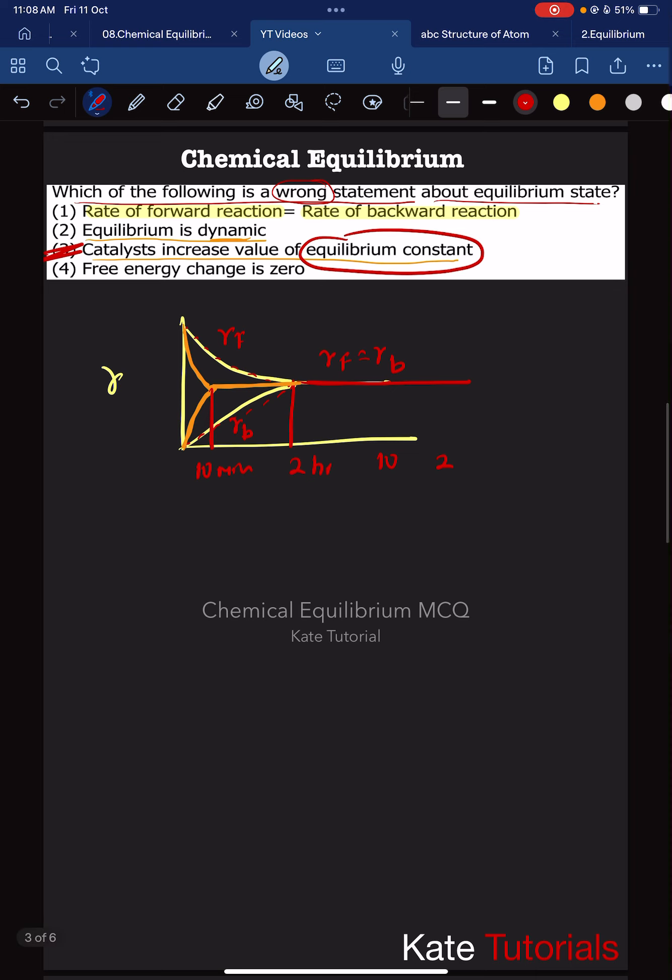Coming to fourth statement, free energy change is 0. Yes, delta G is equal to 0 for equilibrium process. So the incorrect statement is 3. Thank you.